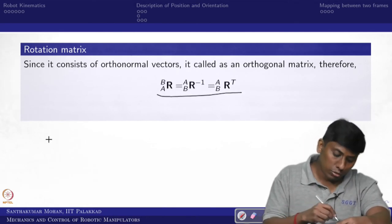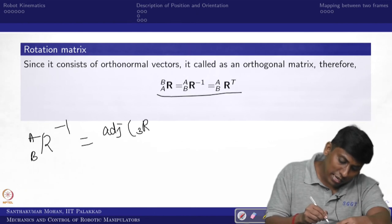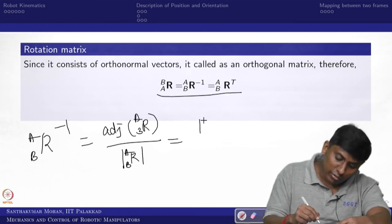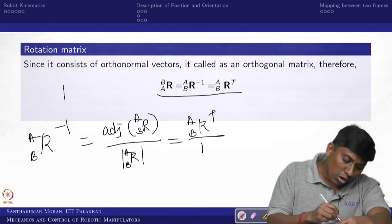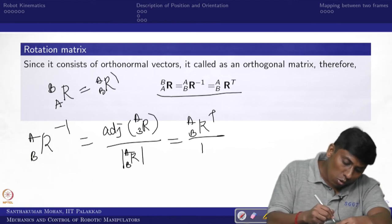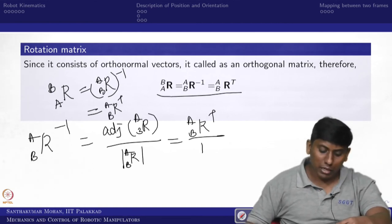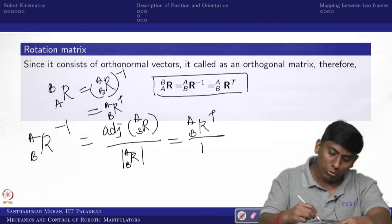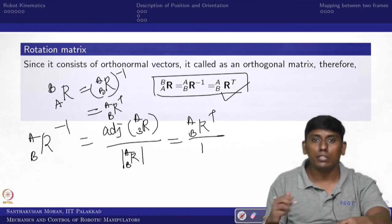Since the rotation matrix is orthogonal with determinant 1, the information of A with respect to B is simply R_BA inverse, which equals R_BA transpose. This gives us a very easy computational form. The rotation matrix can be used in three ways: as a mapping tool for coordinate transformation, as a description of frame orientation, and as an operator to rotate an existing vector to a new vector.